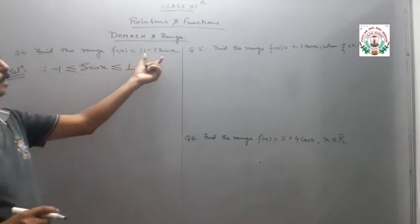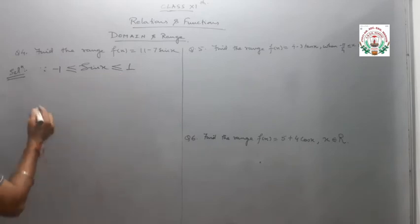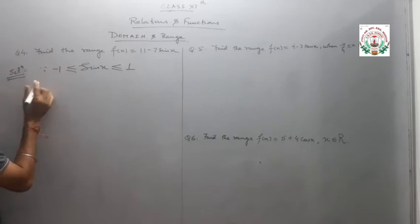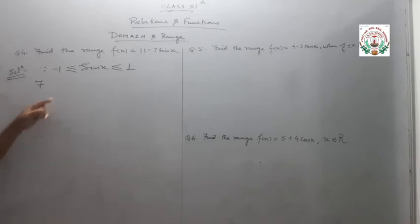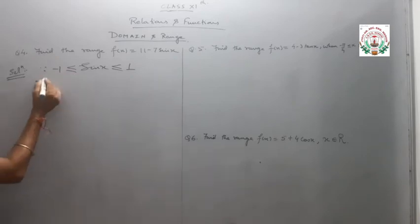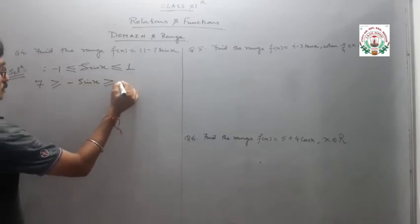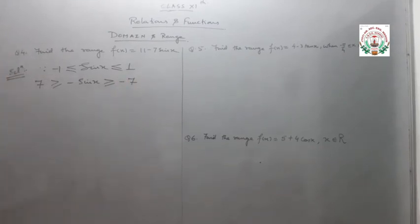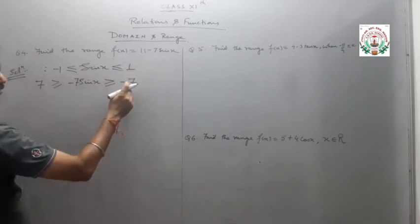We have minus 7 sin x, so we multiply through by minus 7. Multiplying by minus 7 into minus 1 gives positive 7, and minus 7 into 1 gives minus 7. When multiplying an inequality by a negative number, the inequality sign reverses. So: minus 7 is less than or equal to minus 7 sin x, less than or equal to 7.